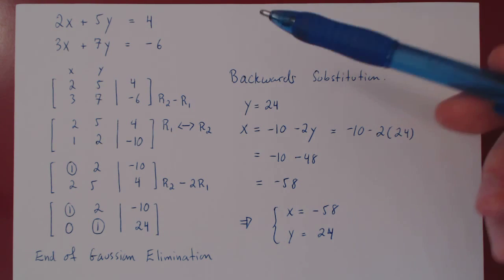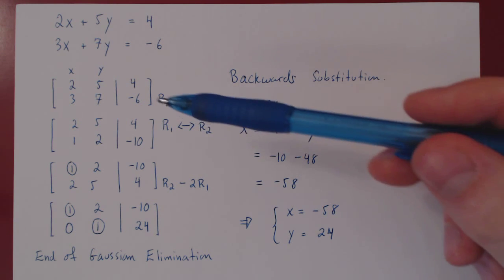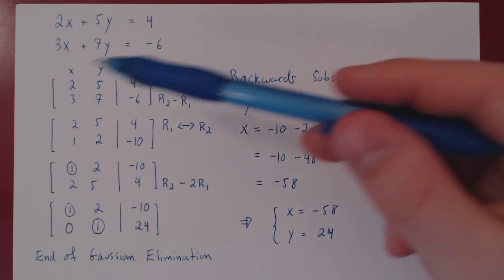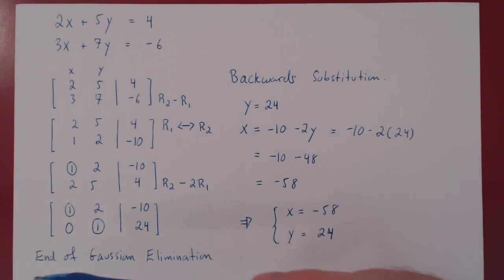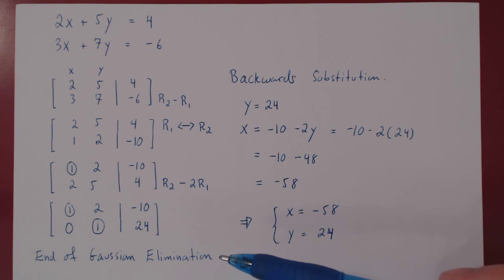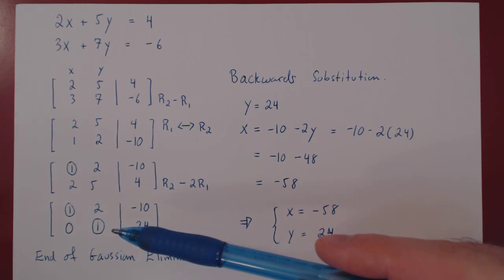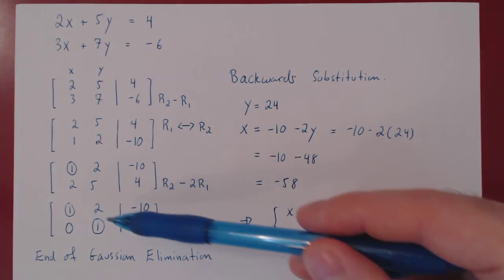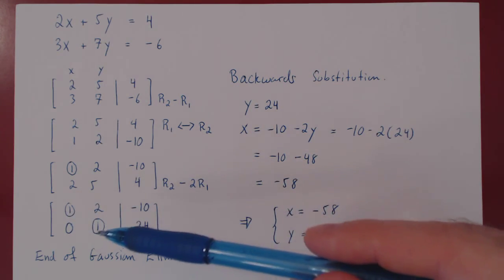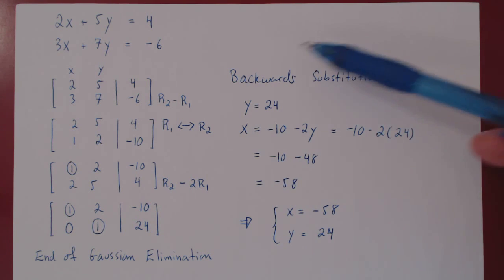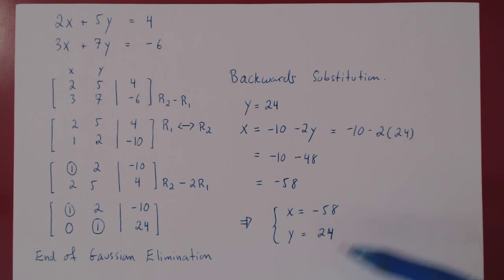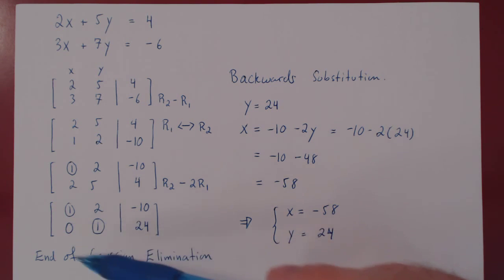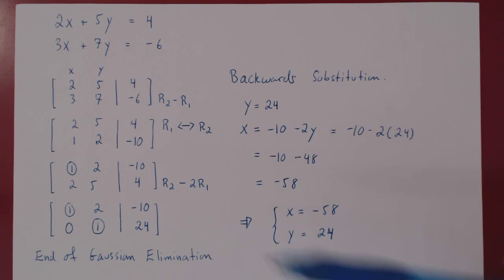Every time you solve a system, you look at the augmented matrix, reduce it by applying Gaussian elimination, and once you've reached the bottom row there are two possibilities. Either each variable will contain a leading one, in which case you will have a unique solution and you always use backward substitution to find it. If one variable or more is free, then we will use what's called Gauss-Jordan elimination, but this will be in future videos.